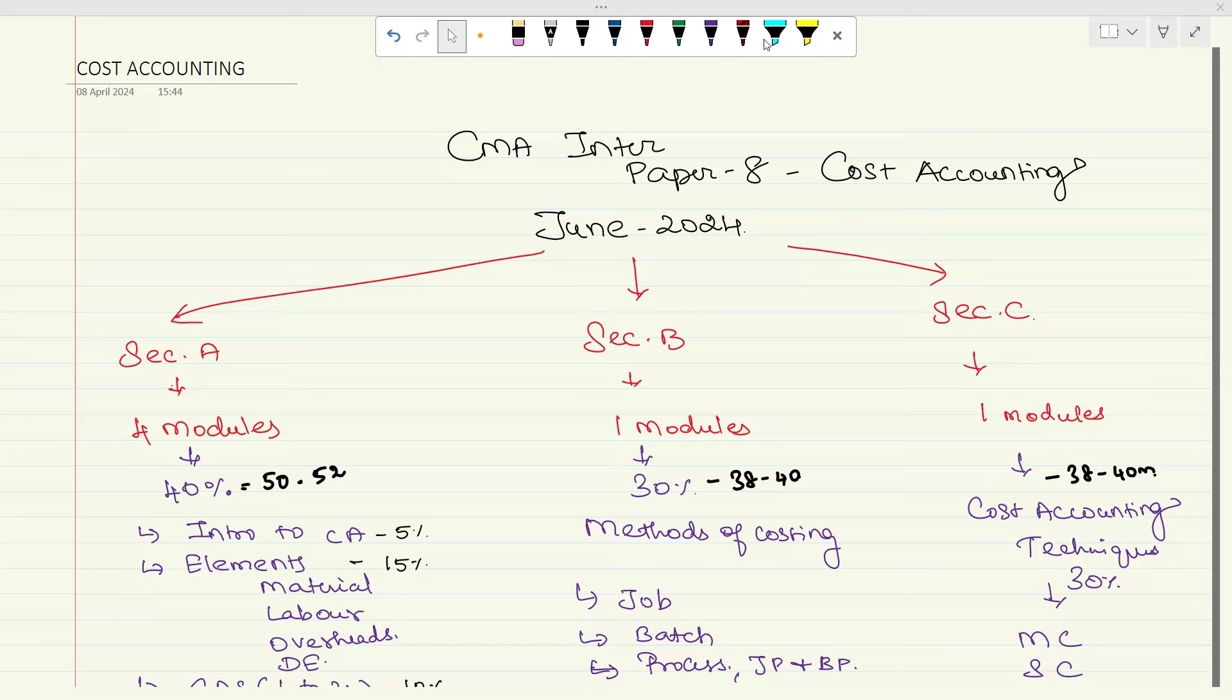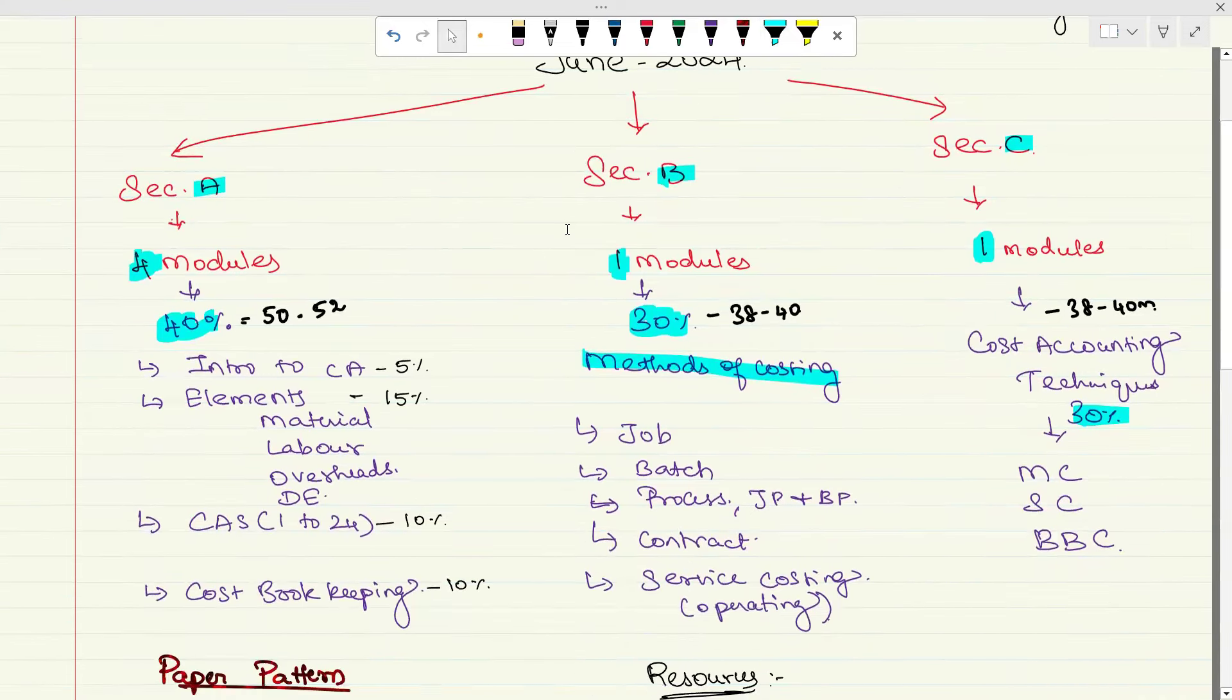Let's come to the discussion part. We are having three parts: section A, section B, and section C. Section A is divided into four modules of 40 percent, section B is divided into one module of 30 percent, section C is divided into one module of same 30 percent. Module number two is based on methods of accounting, module number one is the basics.